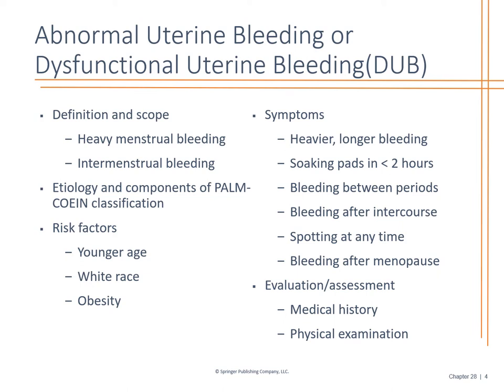Abnormal uterine bleeding, also called dysfunctional uterine bleeding, is very common in women. It can be heavy menstrual bleeding or intermenstrual bleeding. Risk factors include younger age, obesity — with higher glucose rates — and Caucasian race. Symptoms include heavier and longer bleeding, soaking pads in less than two hours, bleeding between periods, after intercourse, spotting at any time, and bleeding after menopause. Remember: bleeding after menopause — defined as one year of no period — is cause for concern and further evaluation.